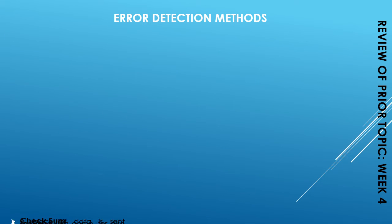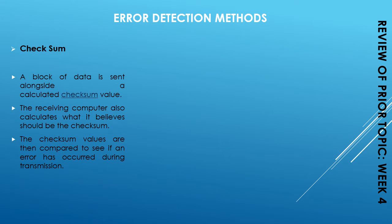Then we discussed the checksum method. Checksum is applied on a block of data instead of one byte. A block of data is sent along with the calculated checksum value. The receiving computer also calculates what it believes the checksum should be, then the two checksum values are compared to see if an error has occurred during transmission.